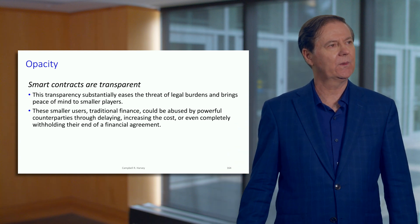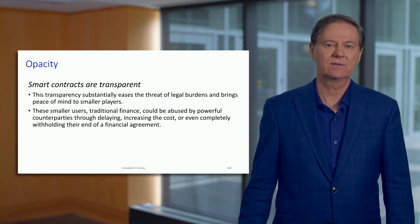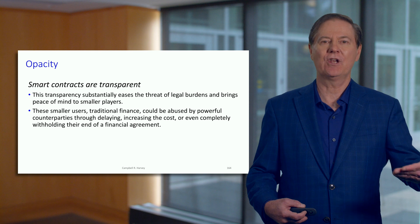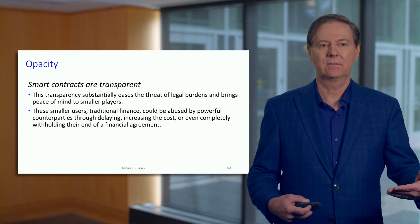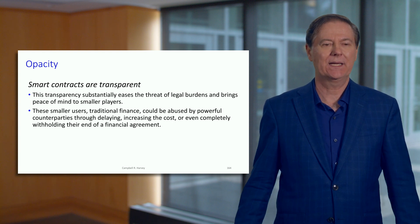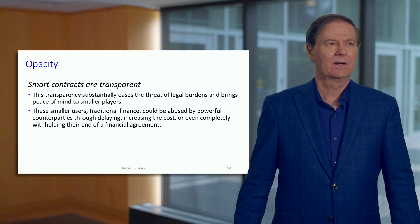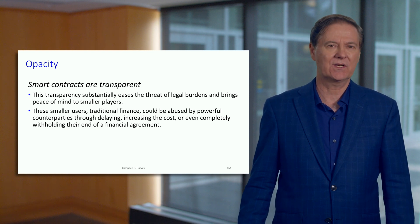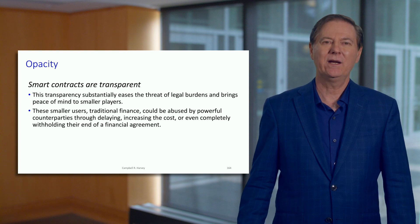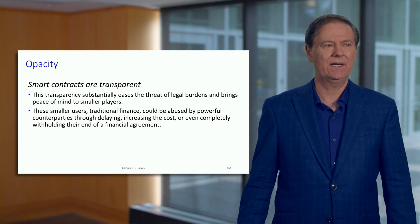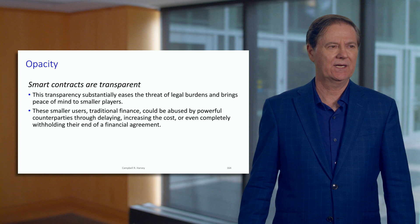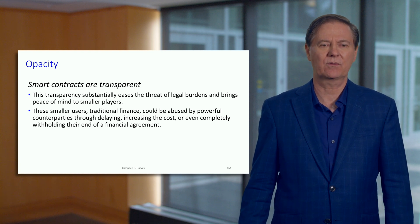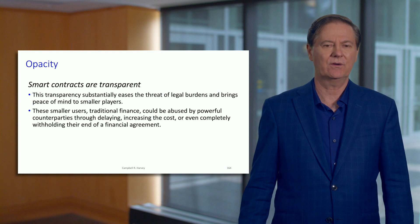This transparency also eases the threat of legal burdens, because there is no fine print. The contract is an algorithm, and every single line of the algorithm is the same font size. In traditional finance, especially small clients, they get taken advantage of all the time — legally, by the fine print. A contract can be very complicated, potentially many pages, and it seems like too much for a small user to figure out all the details.